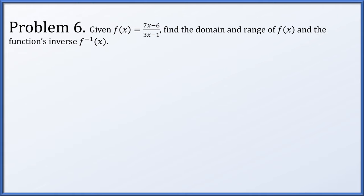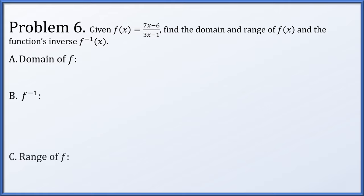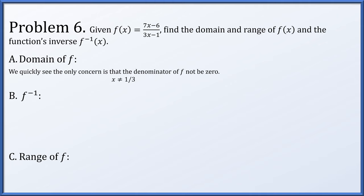For problem six, let f of x equal 7x minus 6 over 3x minus 1. Find the domain and range of the function and the inverse. Looking at f of x, the only concern is not dividing by zero, so x cannot be one-third. The domain of f is all x's other than one-third.